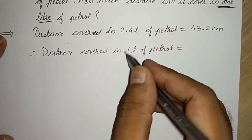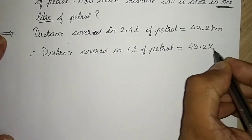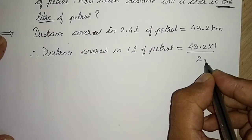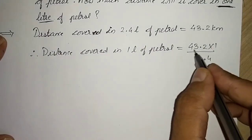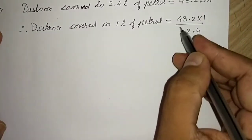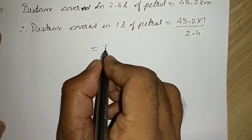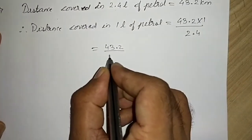Therefore, the distance covered in one liter of petrol will be 1 multiplied by 43.2 divided by 2.4, or you can simply write 43.2 divided by 2.4 as you wish, because 43.2 into 1 will be 43.2.